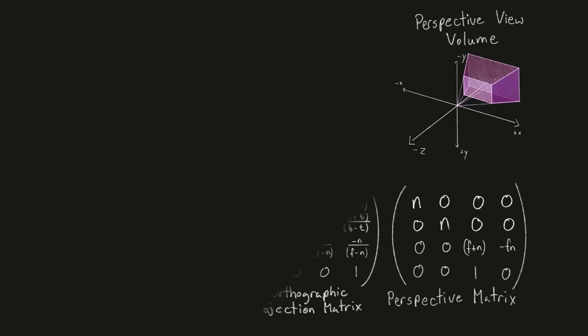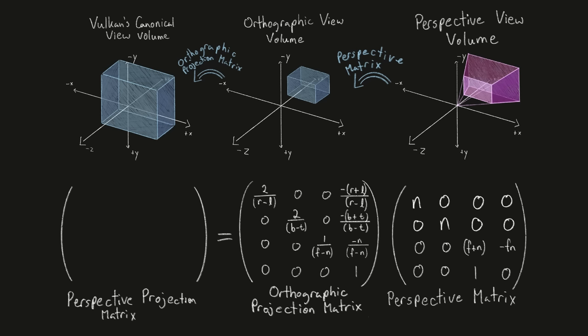If you apply the perspective transform, followed by the orthographic projection transform, the combined result is known as the perspective projection transformation. And this is what we've been after. This matrix will transform objects contained by the viewing frustum into the canonical view volume, and in doing so will make the objects appear in perspective.